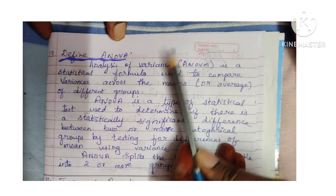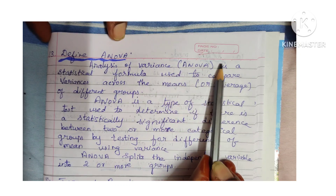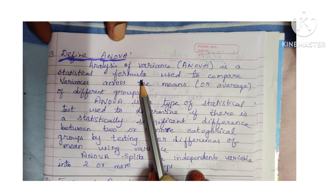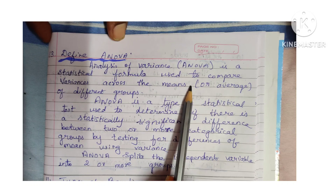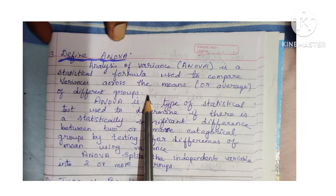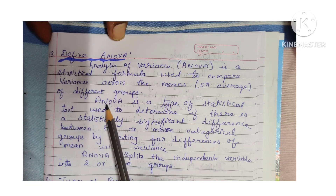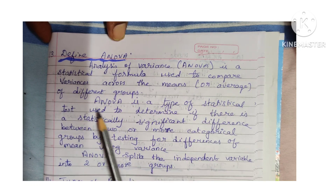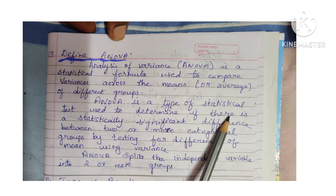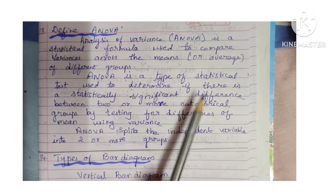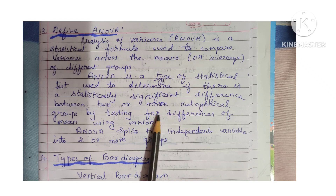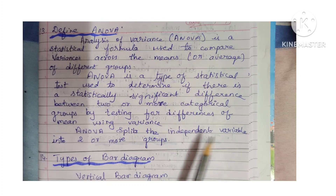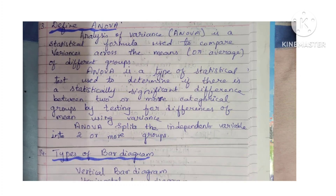Next is define ANOVA. ANOVA means analysis of variance. It is a statistical formula used to compare variances across the means or averages of different groups. ANOVA is a type of statistical test used to determine if there is a statistically significant difference between two or more categorical groups by testing for differences of mean using variance. ANOVA splits the independent variable into two or more groups.